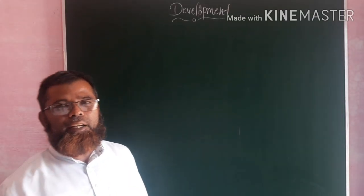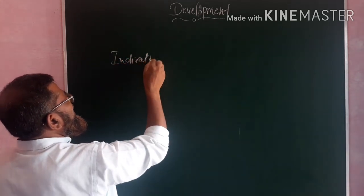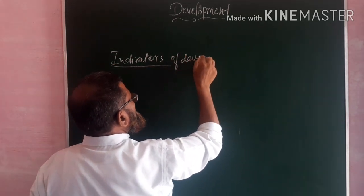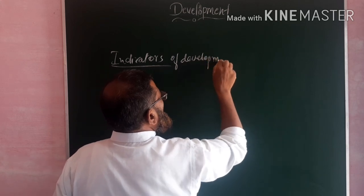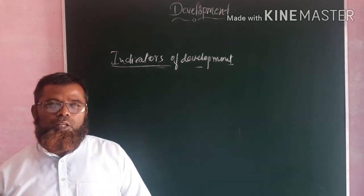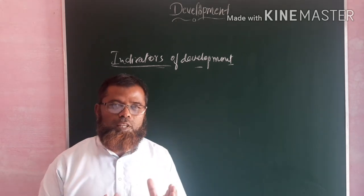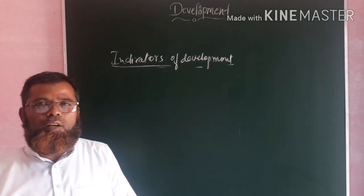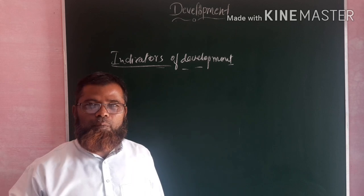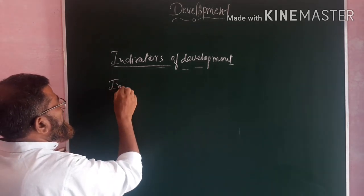Now about the indicators of development. What is the use of these indicators of development? They are used in order to measure the development — that is, how much development is taking place. In order to measure that, we use these indicators. The first indicator is the income indicator.